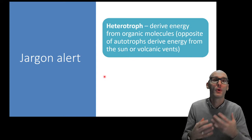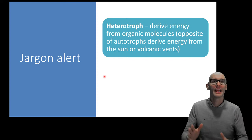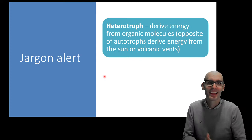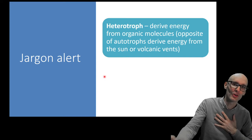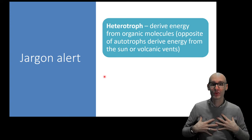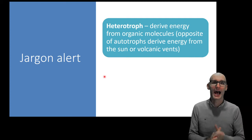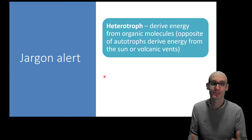The opposite of that is an autotroph which derives their energy either from the sun or volcanic vents. The origin of these terms is hetero means different, and so we eat other things, different organisms, dead or alive, organic molecules produced by other organisms. Auto means self, so autotrophs are self-sufficient and can derive energy from the sun just like plants.